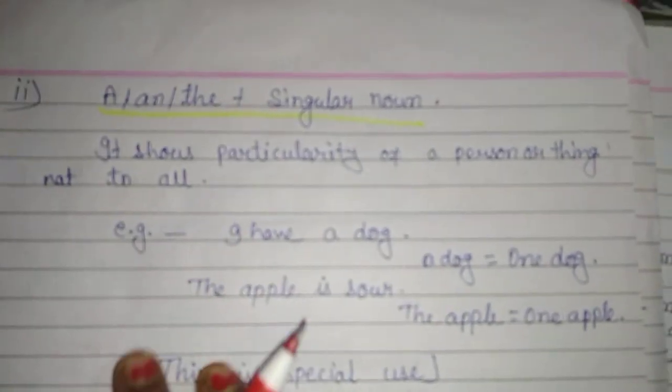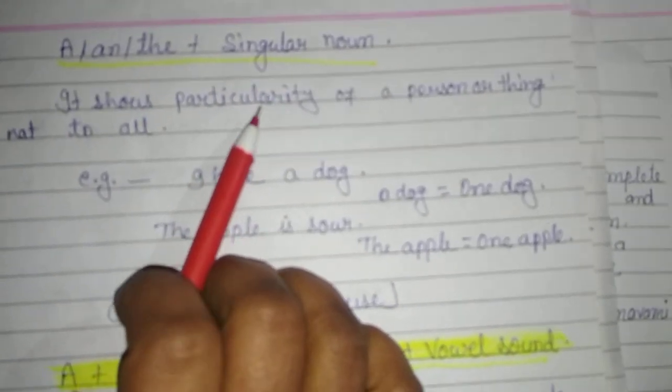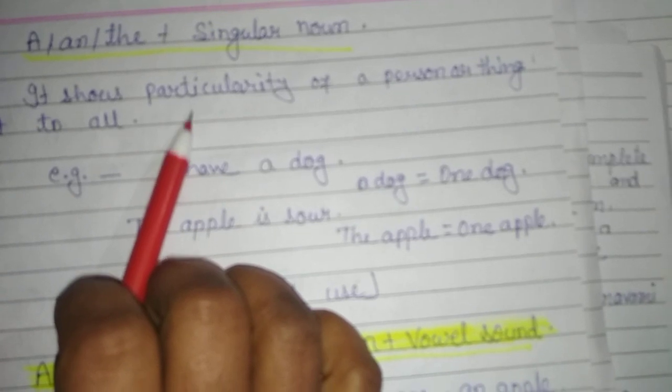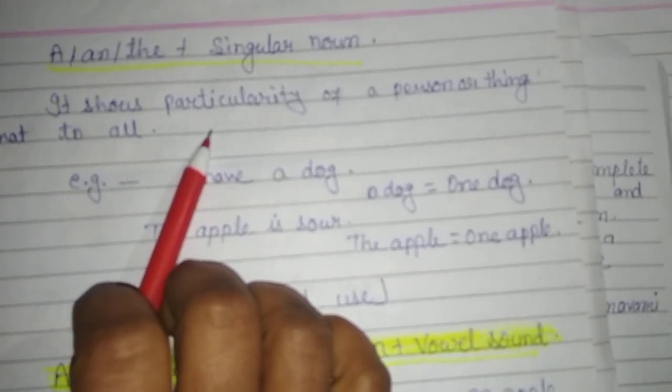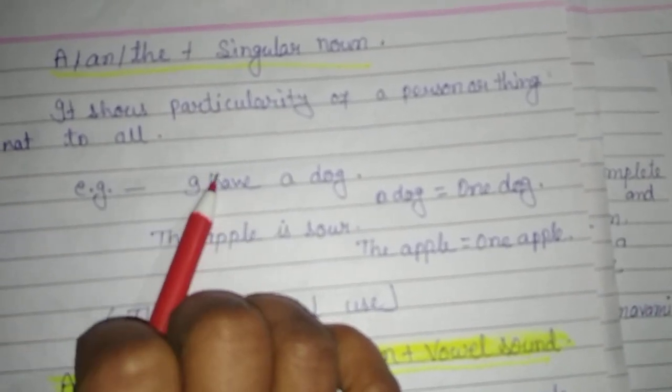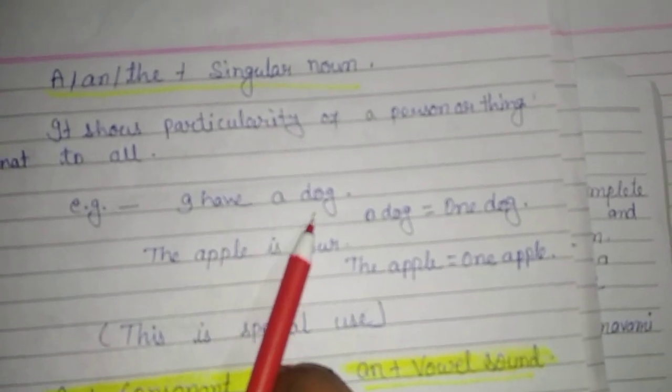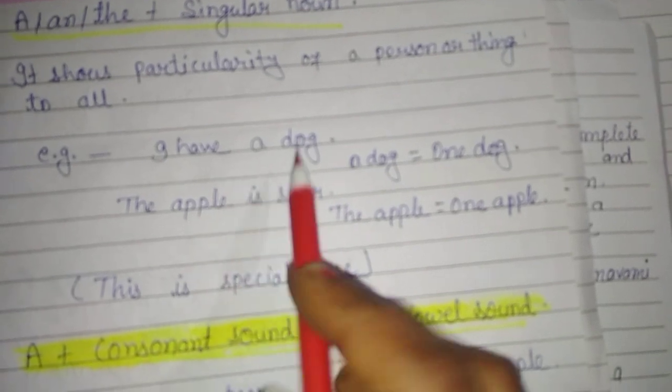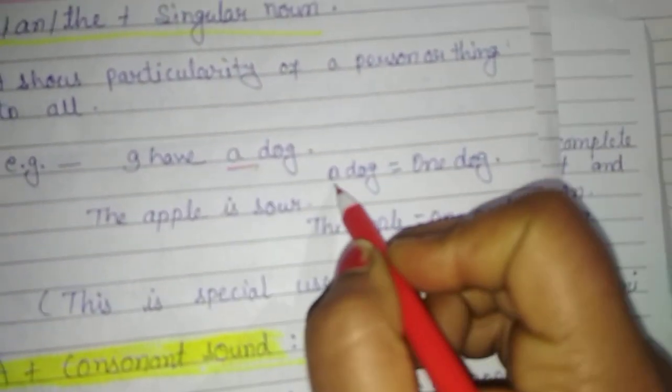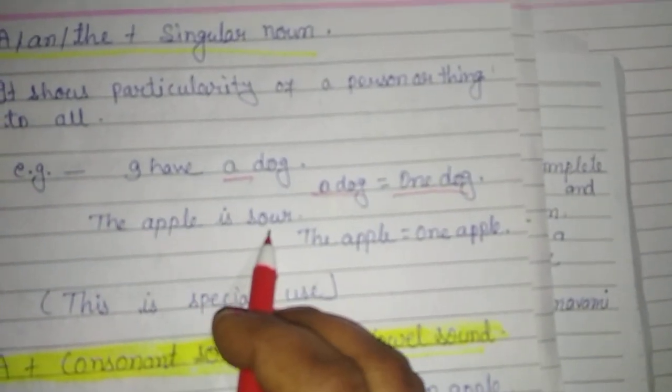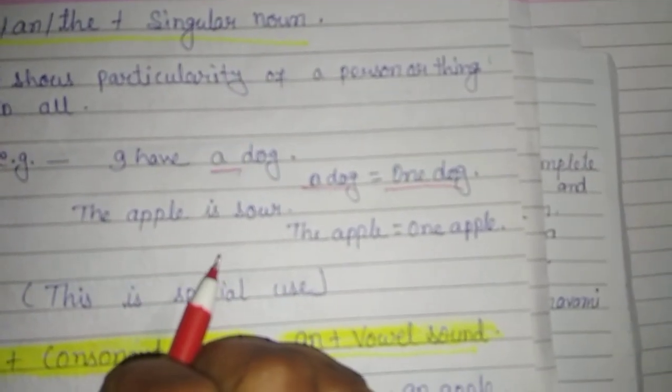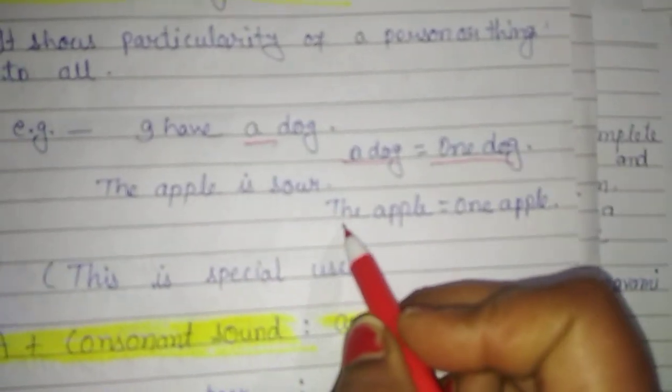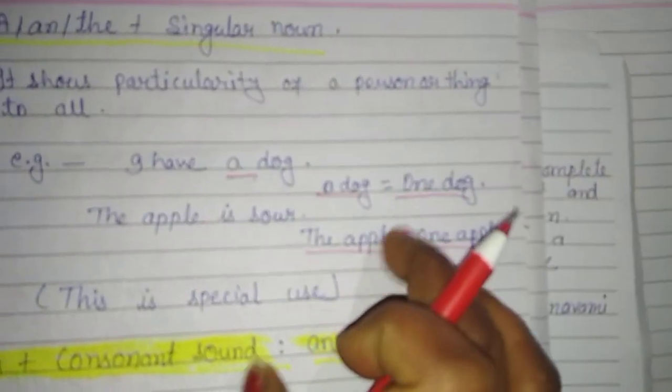And now I'm going to tell you some specific rule. Here is another specific rule: 'a' or 'an' or 'the' plus singular noun shows particularity of a person or thing, not all, but what we want to say about the noun. For example, I have a dog - a dog means one dog. The apple is sour - the apple is sour means the apple which I have tasted, that apple is sour. Here the apple means one apple. So this rule is a special rule.